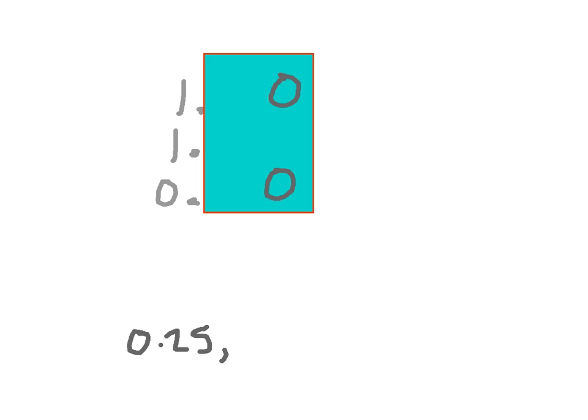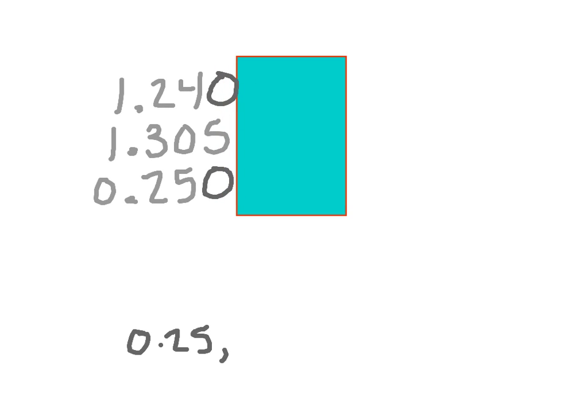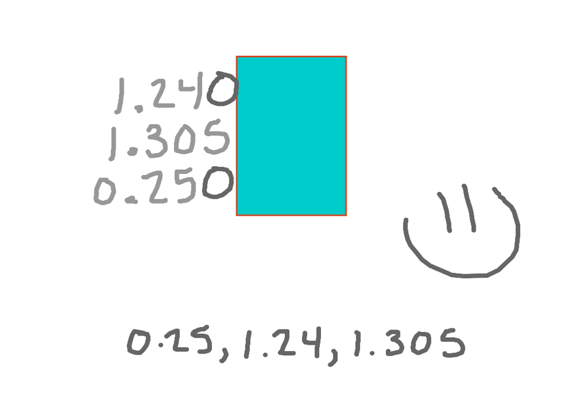Now it's going to be tricky. If I look at the whole number, we know that 25,000ths is going to be our least one. So let's put 25,000ths first. Then I can compare my whole numbers and move it over into the tenths place. And automatically I know that 1 and 305,000ths was greater — but we're doing least to greatest. So: 1 and 24,000ths, and then 1 and 305,000ths. Very good.